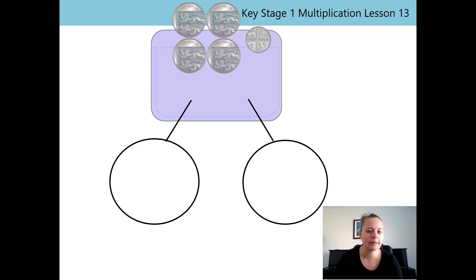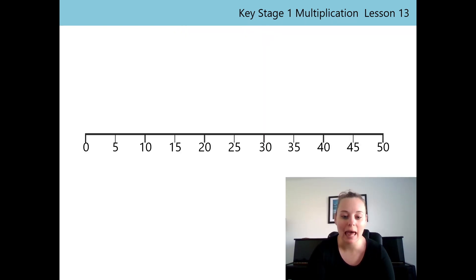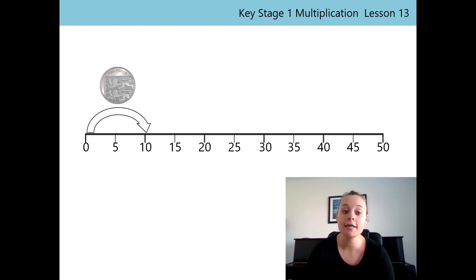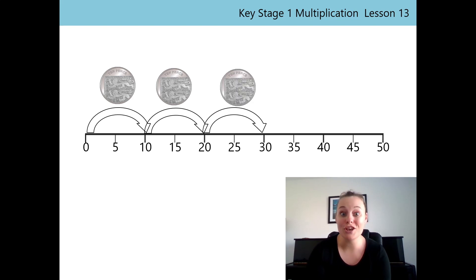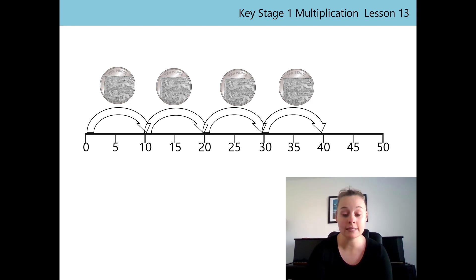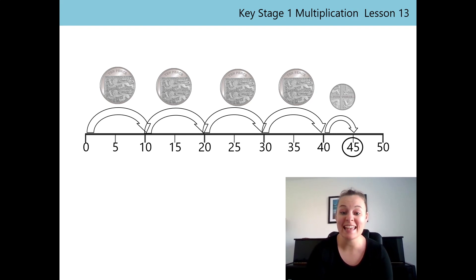Let's use our number line to work out the total amount of coins in our purse. I'm going to make jumps of 10 to represent my 10P coins, and skip count in tens: 10, 20, 30, 40. So that's my four 10P coins. And then I need to remember I've got one 5P coin. So my total amount in my purse is 45P. Well done.